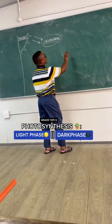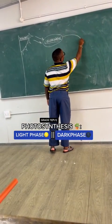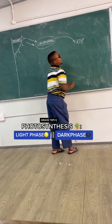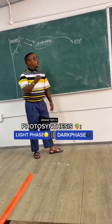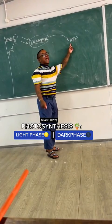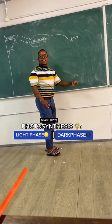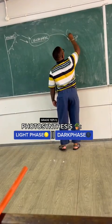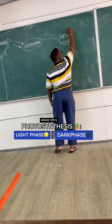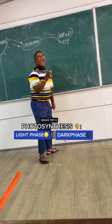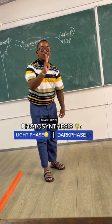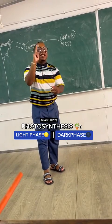It uses light to do two things. Firstly, it uses it to form energy — ATP. ATP means adenosine triphosphate. ATP is formed by the combination of ADP and an additional phosphate group. ADP stands for adenosine diphosphate, and by adding a phosphate, they make adenosine triphosphate.